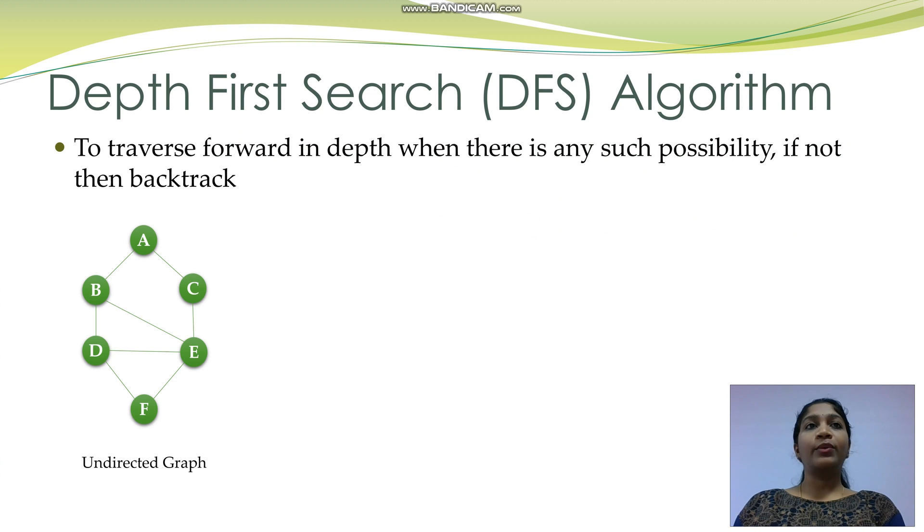This algorithm is used to traverse a tree or graph data structure. It starts at the root node and explores along the branches to find a solution. If there is no solution, then it backtracks.